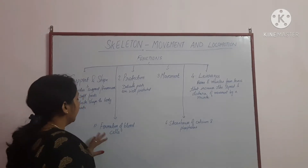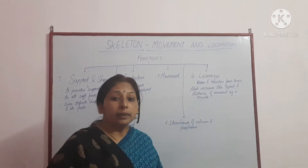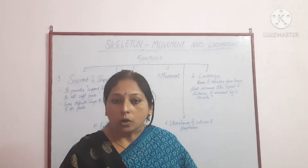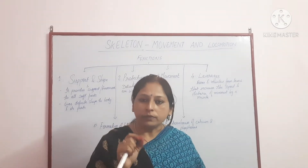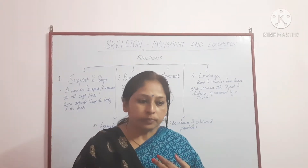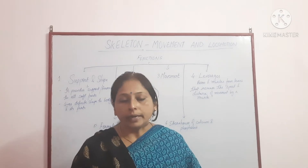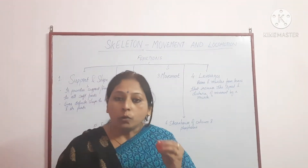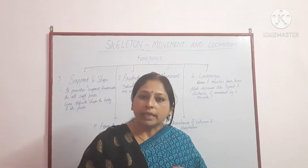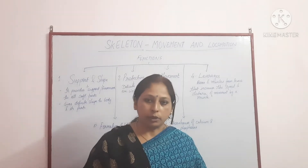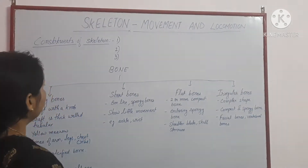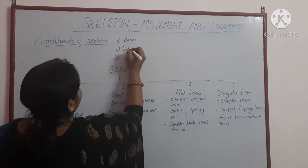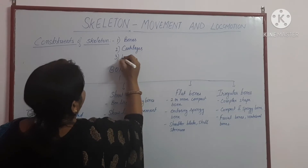Next is formation of blood cells. RBCs (red blood cells) and WBCs (white blood cells) are formed in the marrow of the long bones. You can write this as a single sentence for exam purposes. Then the storehouse of calcium and phosphorus: bones are made up of calcium and phosphorus, so they serve as the main storehouse of these minerals in the body.